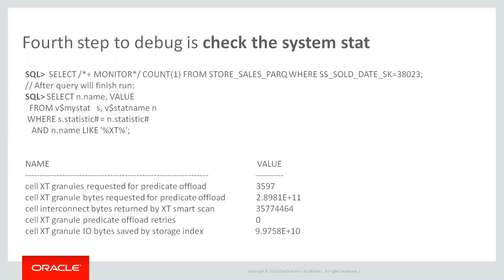Let's imagine that your query is done and you want to know more details. You said that a lot of data was filtered out on the cell side and only some rest of the data was moved back toward the database side. But you have a very natural desire to know how much data in numbers you moved to the database side, or you want some extra statistics regarding this query. You can run a simple SQL statement which joins the V$MYSTAT table and V$STATNAME table, and filter out by an XT predicate.